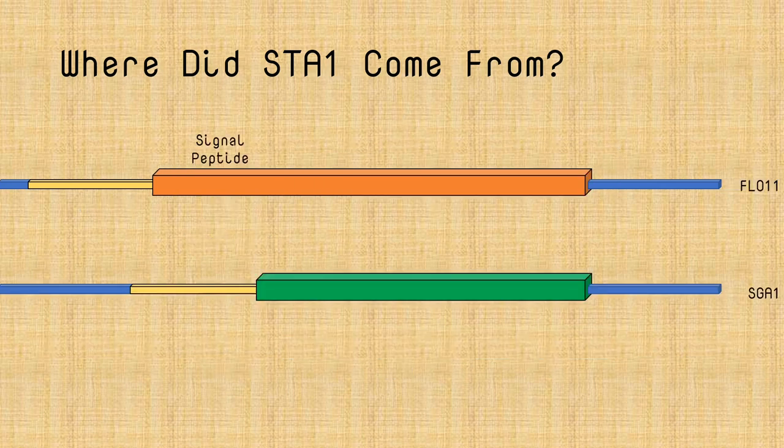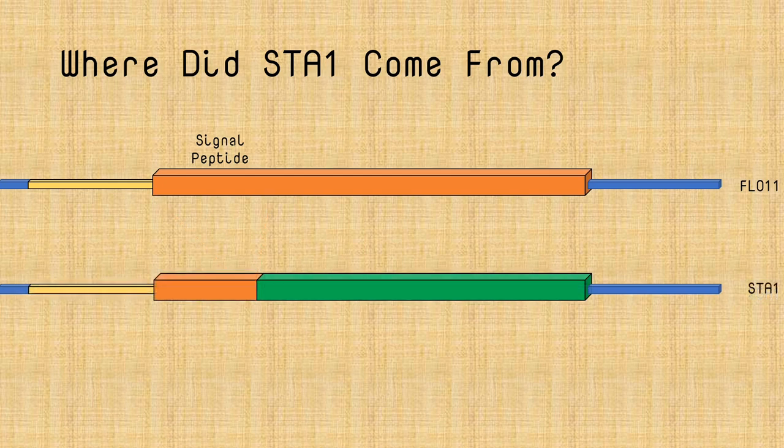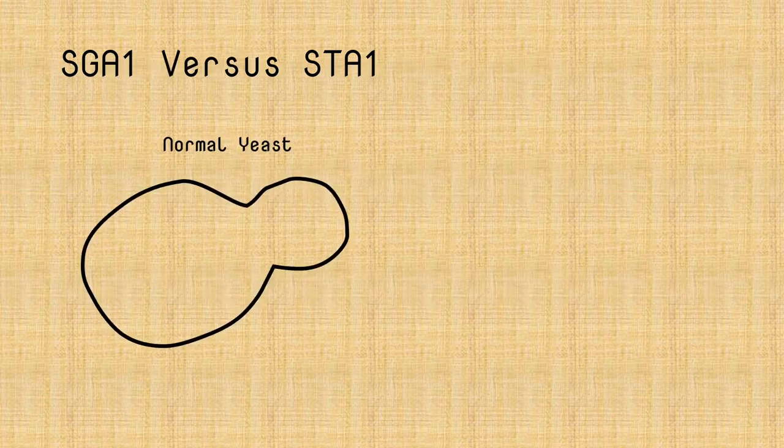So where did this come from? How did this arise? Well, it turns out that it's not uncommon during cell division for mistakes to be made. And a lot of times what can happen is you can get pieces of DNA that sort of accidentally get moved from one part of the chromosome to another.